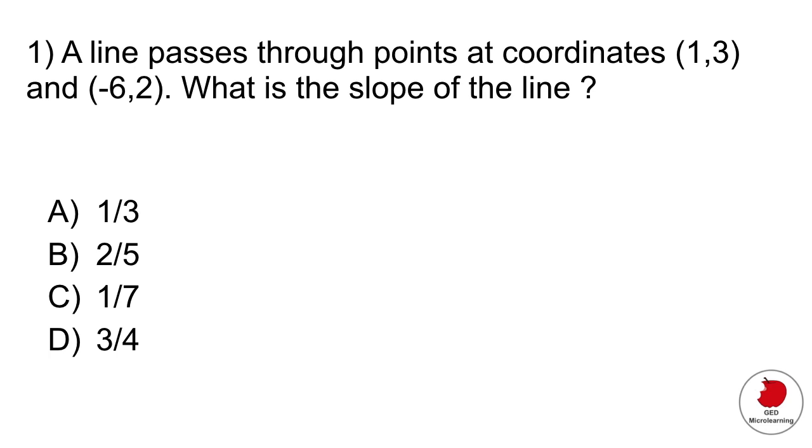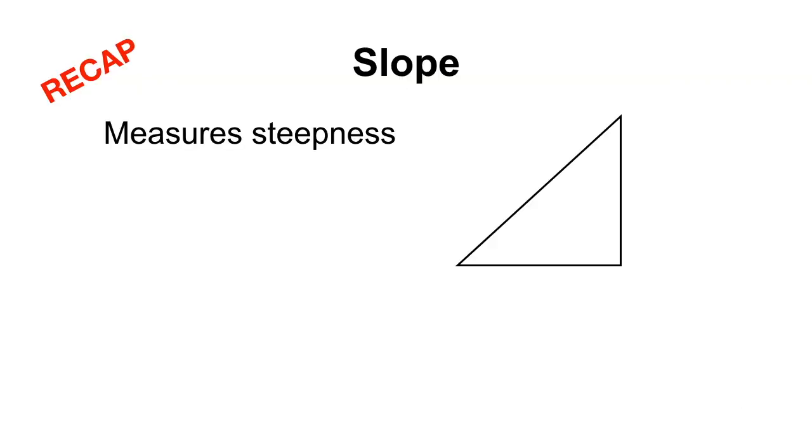Question one. A line passes through points at coordinates (1, 3) and (-6, 2). What is the slope of the line? This is a kind of level 1 slope problem and what you have to remember is first of all what is the slope.